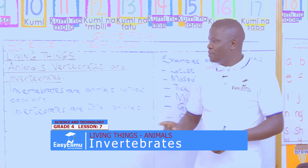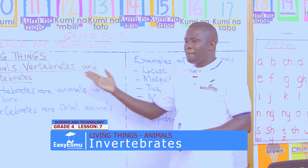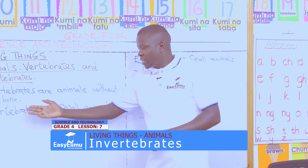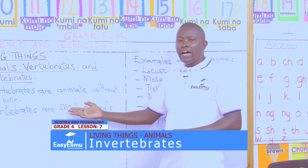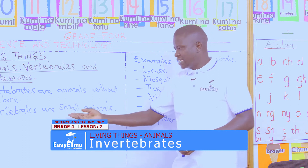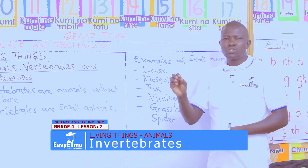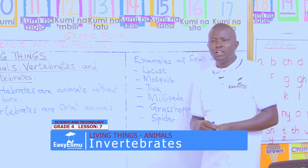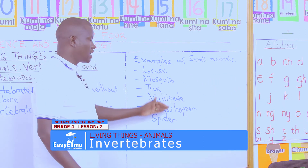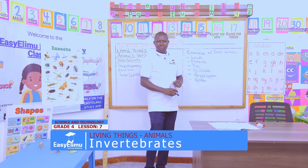Class, remember: invertebrates are animals without backbone, and invertebrates are small animals. Most tiny animals are categorized as animals without backbone because we cannot feel any bone among them. We have given examples of these animals without backbone, and this is the activity for us to do.